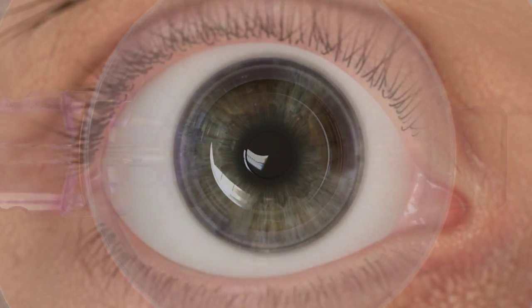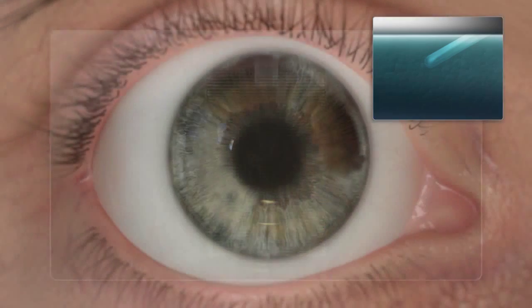The flap is created by first forming a tunnel to avoid an opaque bubble layer, or OBL. The tunnel provides a path for the release of the gas and water generated in the flap creation process.